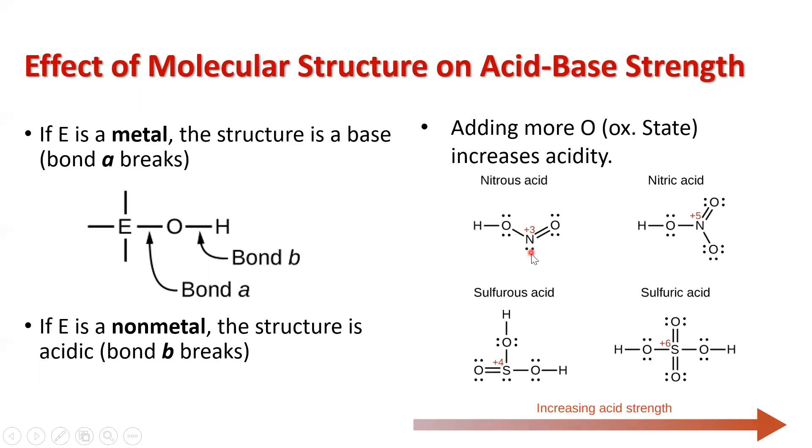If we were to look at nitrous acid, this is nitrite, and then we've got our hydrogen linked on, so this is nitrous acid. This is nitrite, sorry, nitrate. This is NO3 bonded to hydrogen, so this is nitric acid. Nitric acid is a stronger acid than nitrous acid.